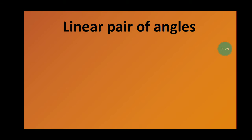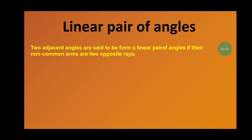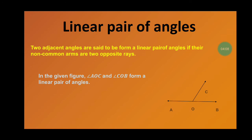Linear pair of angles — a very important concept. Two adjacent angles form a linear pair if their non-common arms are two opposite rays, meaning a transversal line meets a straight line. In the given figure, angle AOC and angle COB form a linear pair of angles, because two angles are formed on a straight line.